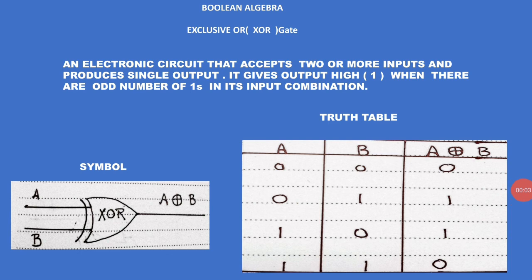Exclusive OR, also called XOR gate — an electronic circuit that accepts two or more inputs and produces a single output. It gives output one or high when there are an odd number of ones in its input combination. With two inputs A and B, the output is A XOR B. The operator is a circle-plus symbol. Observing the truth table: zero-zero gives zero, zero-one gives one, one-zero gives one.